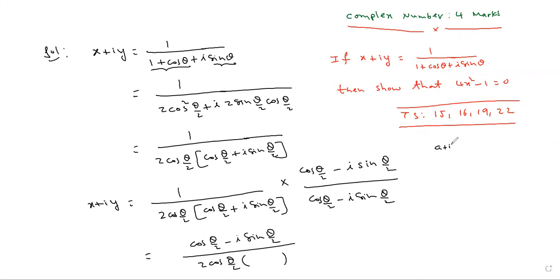And then a plus i b into a minus i b is equal to a square plus b square. So here in denominator, what is it? Cos square theta by 2 plus sine square theta by 2, which is equal to 1.